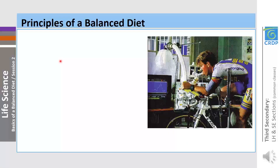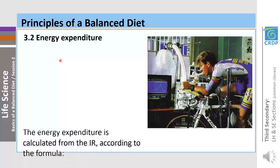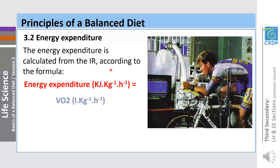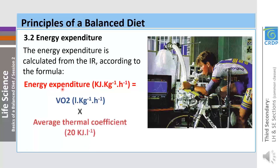Knowing the volume of oxygen consumed during respiration and the average thermal coefficient of oxygen, energy expenditure is calculated from the respiratory intensity according to the formula: Energy expenditure = volume of oxygen (L·kg⁻¹·h⁻¹) × average thermal coefficient (20 kJ·L⁻¹). By simplifying units, energy expenditure is expressed in kilojoules per kilogram per hour.